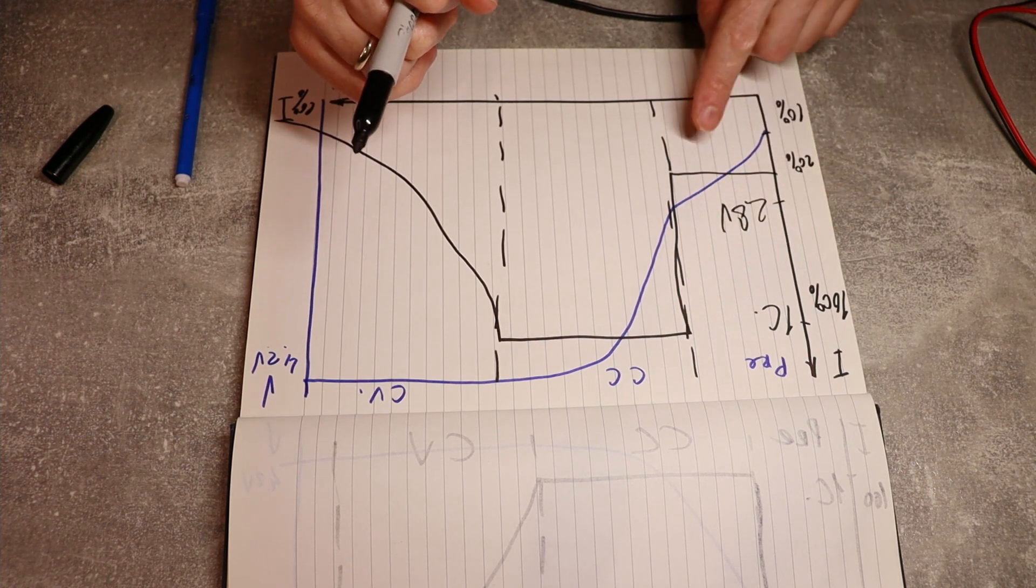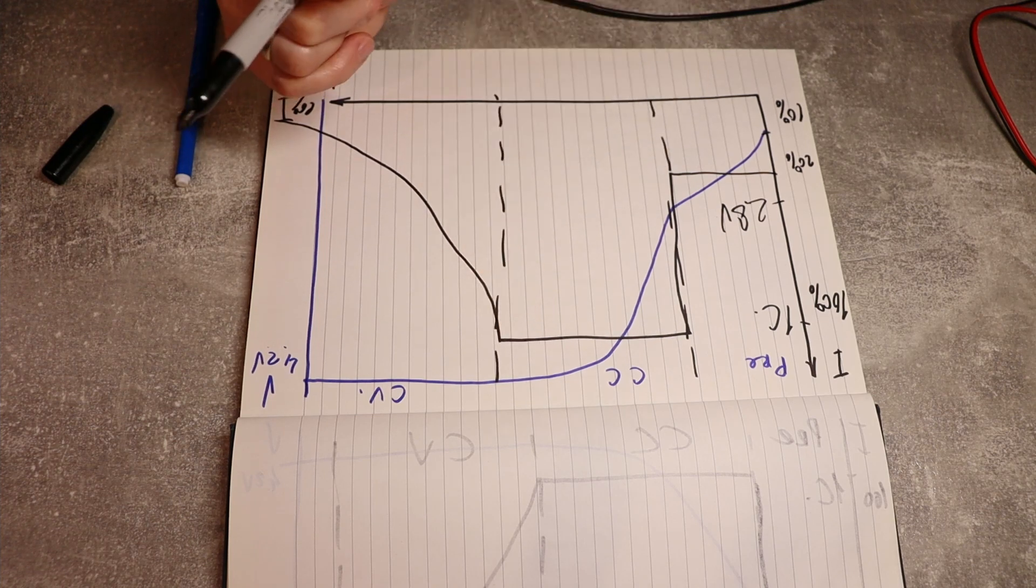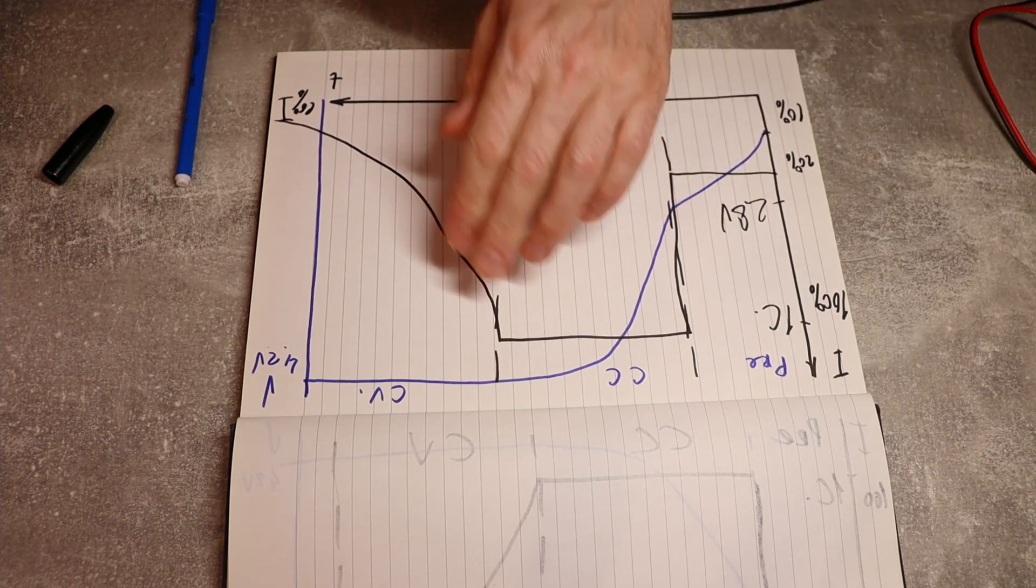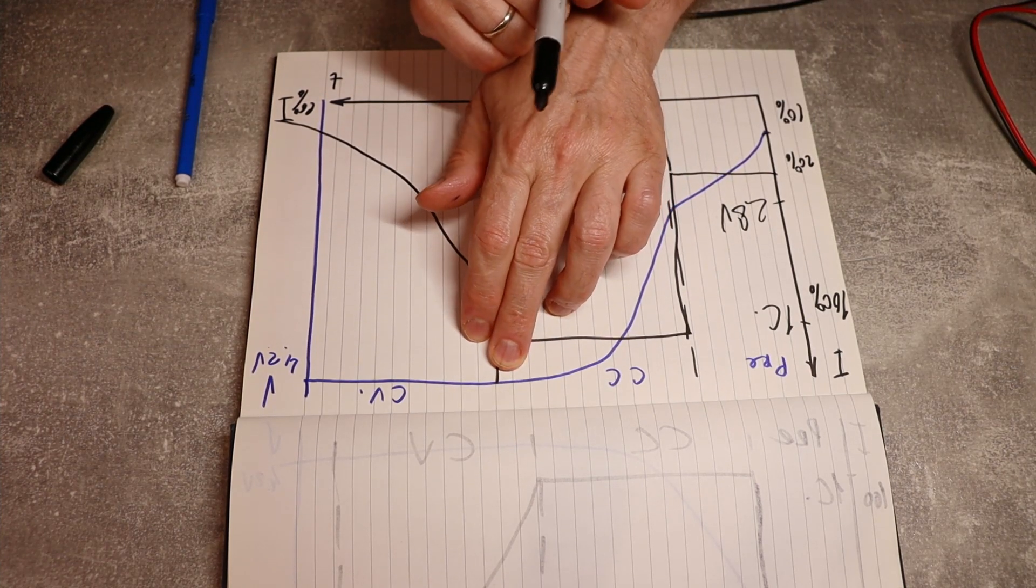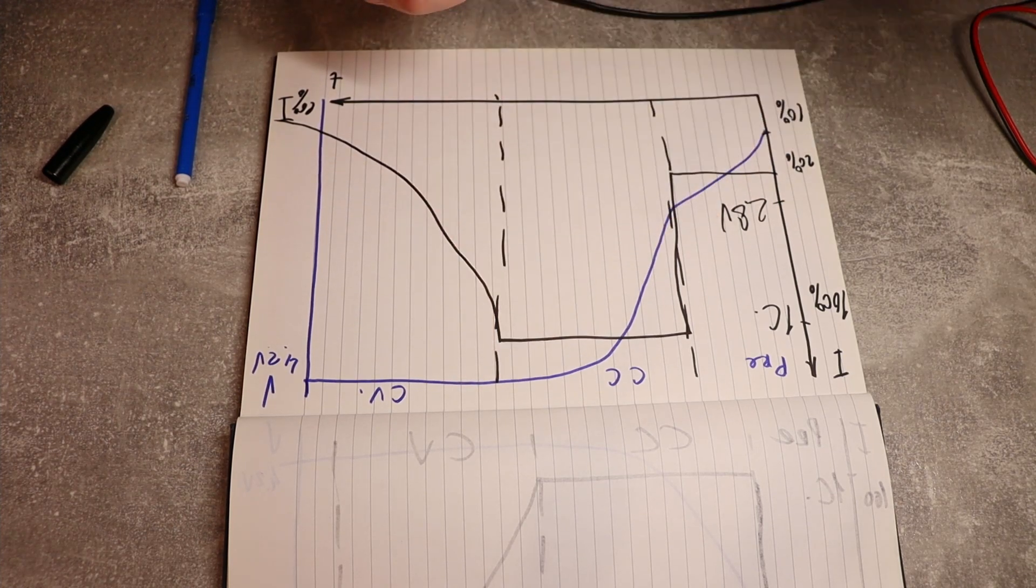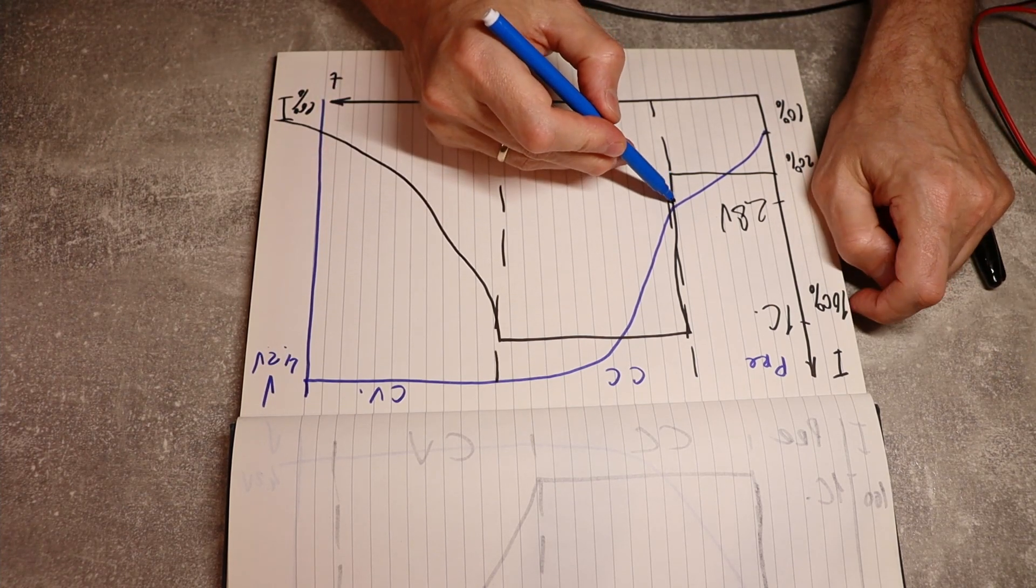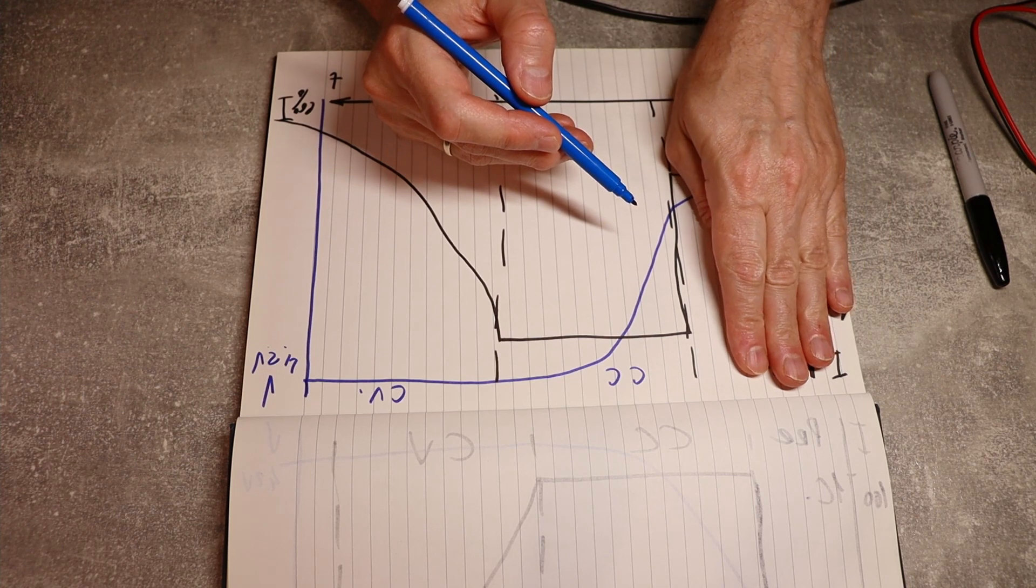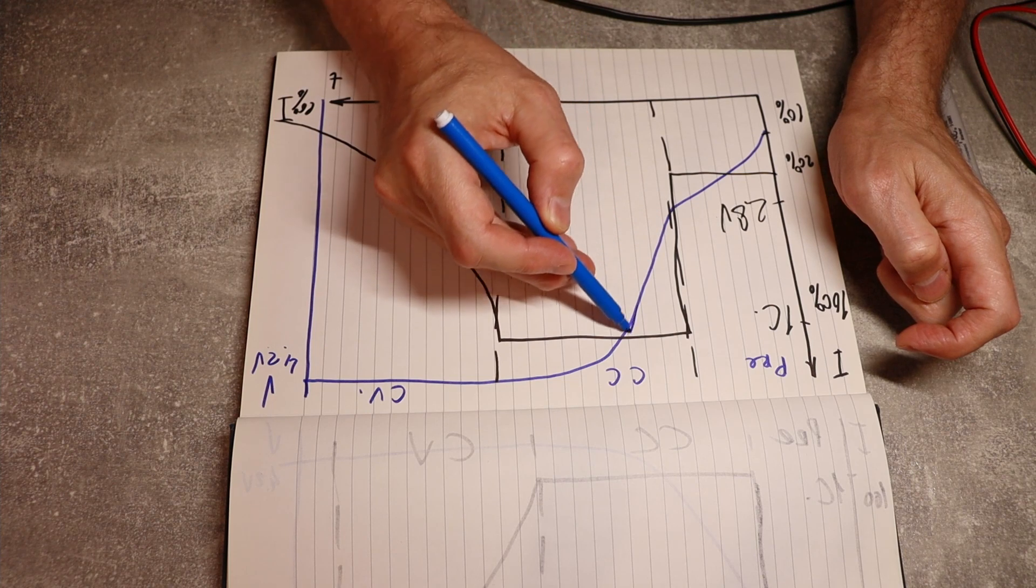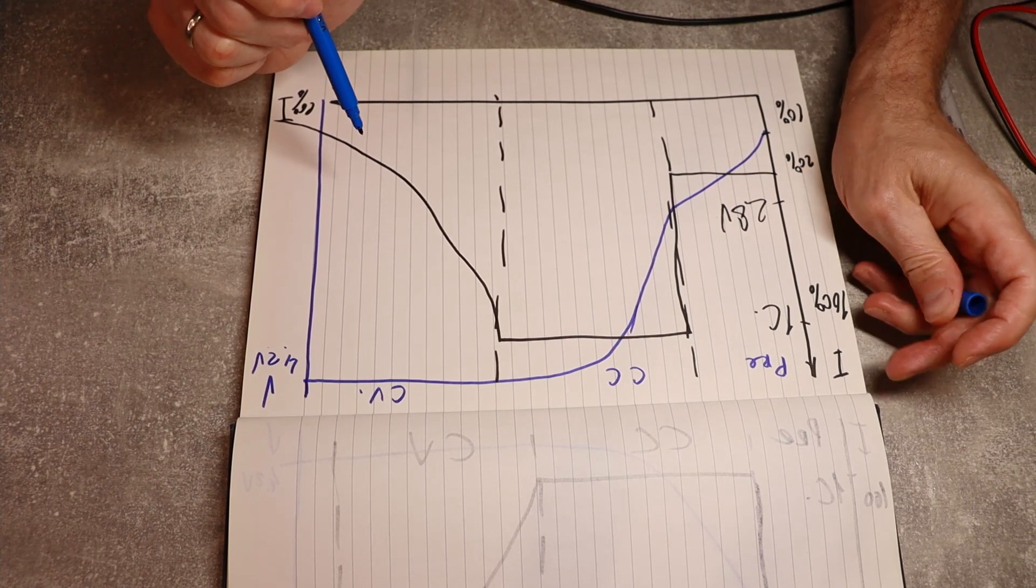So we will start with the constant current mode, where we would go straight to 2Ah current, and we will keep charging this battery until at the same time the voltage will reach 4.2 volts. So voltage will reach our desired target for charging. So this blue diagram here is our voltage. So if we start charging, if we ignore this pre-charge bit for now, we start charging from 2.8 volts, our voltage will be increasing, increasing, until it will reach 4.2 volts.